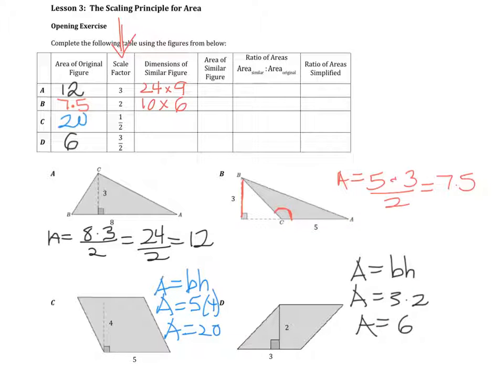And for C, the scale factor is 1 half. So the base is 5 halves, or 2.5 by 2. And for D, the scale factor is 3 halves. So if I multiply that to the base and the height, I get 4.5 by 3.